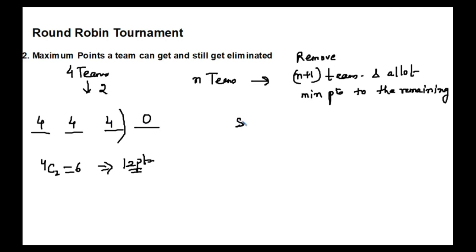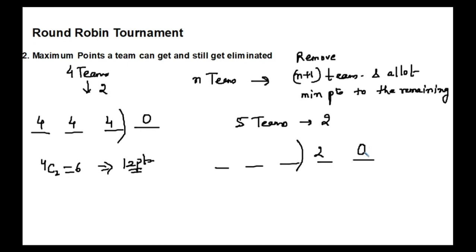Let's take one more example of five teams, and this time two teams are proceeding to the next round. I remove n plus one — three teams — and allot minimum points to the remaining two. The last team gets zero points, and the second-to-last gets two points since it won one match against the last team. Out of 20 points, two have been allotted, leaving 18 points, which I divide equally among the three remaining teams — six each. So with a maximum point of six, even a team can get eliminated.